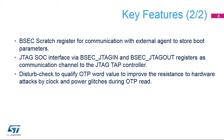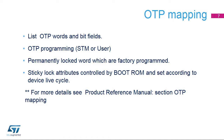There is a Disturb check feature to qualify OTP word value to improve resistance to hardware attacks by clock and power glitches during OTP read. The OTP map describes the full list of OTP words and bit fields, including information about who is allowed to program the OTP words — STMicroelectronics or the user — whether words are permanently locked as factory programmed, for example analog trim and memory repair, and sticky lock bits controlled by boot ROM and set according to the device lifecycle. There are three sticky bits per OTP word: Shadow Write Lock, Shadow Reload Lock, and Shadow Program Lock. For more details, see the Product Reference Manual, section OTP Mapping.